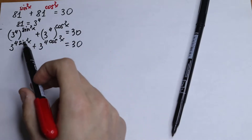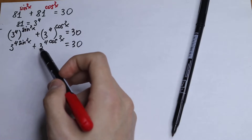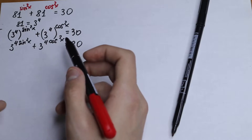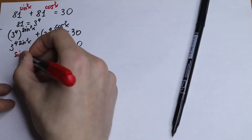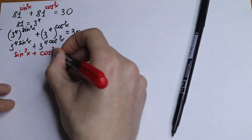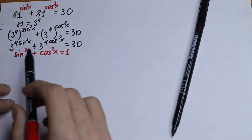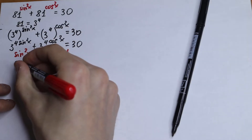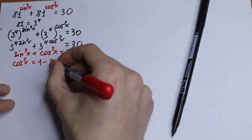What are we going to do next? We have sin²x and cos²x. It's hard to work with both, so we recall the main trigonometric identity: sin²x + cos²x = 1. We can express cos²x from here, and we get cos²x = 1 − sin²x.